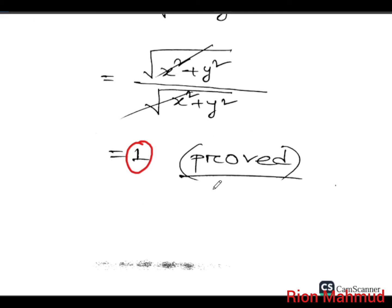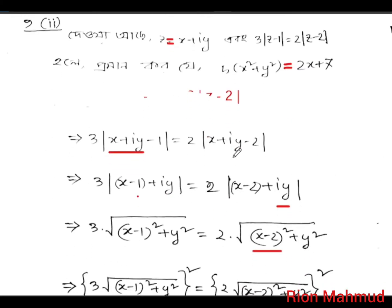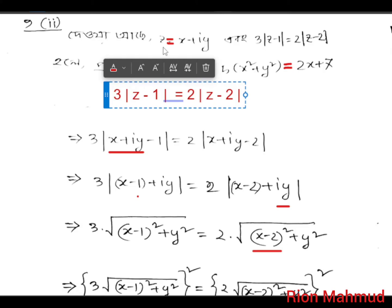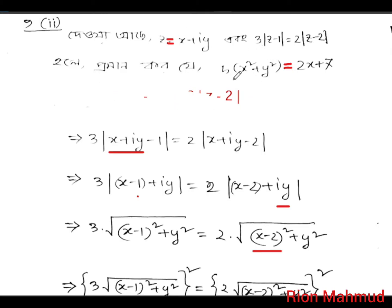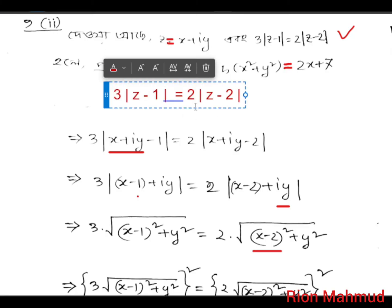For the proof, we proceed with the second part. The final result: five into x squared plus y squared equals 2x plus 7. I can confirm the proof is okay.